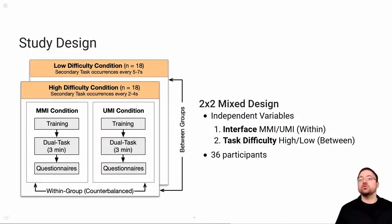In our study we used a two-by-two mixed design with interface as our within-groups factor and task difficulty as our between-groups factor. So participants used both interfaces in either the high or low difficulty. The difficulty level was set by the frequency in which the secondary tasks occurred. In each condition, participants familiarized with the task and interface in a short training session. Afterwards the participants performed the dual task for three minutes and finally answered our questionnaires before starting with the next condition. In total we had 36 participants, so 18 per difficulty condition.